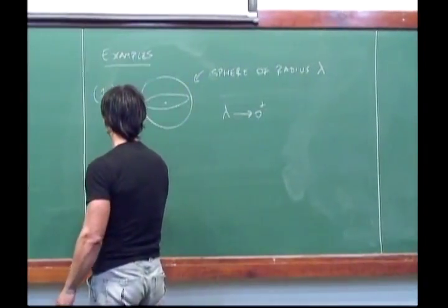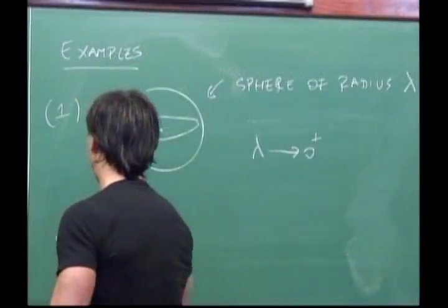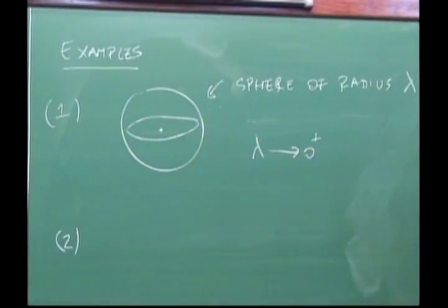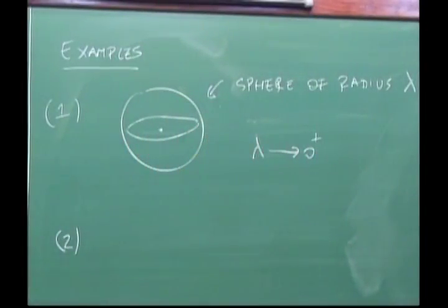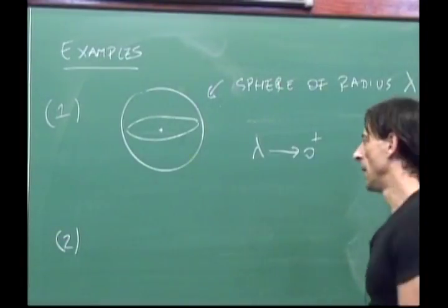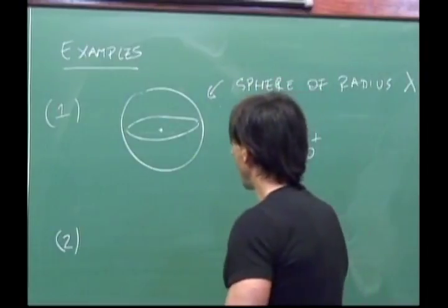A somewhat less trivial example is again a problem with constant mean curvature, but now the ambient space is the three-dimensional sphere S³ endowed with its canonical Riemannian structure.